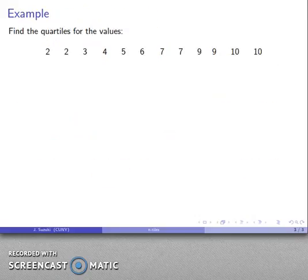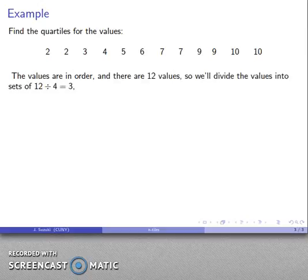So, for example, let's take a look at a bunch of data values. Maybe it looks something like that. And we'll note that the values here are actually in order, which is important because if they're not in order, we can't reasonably separate these sets.